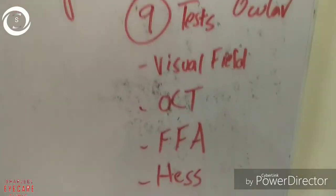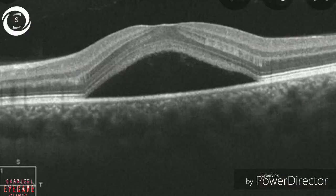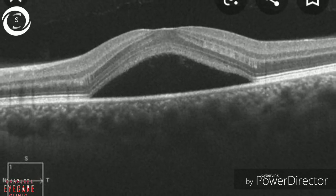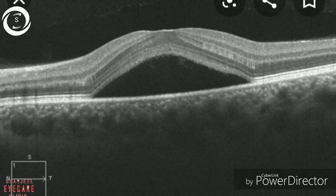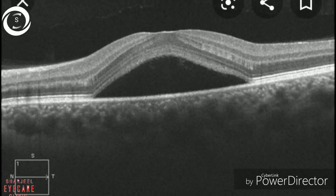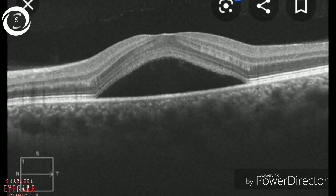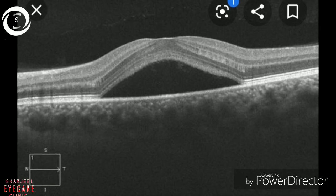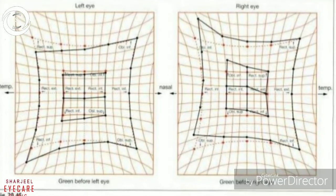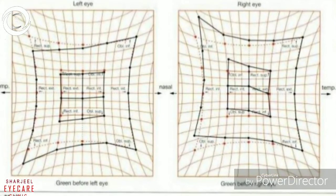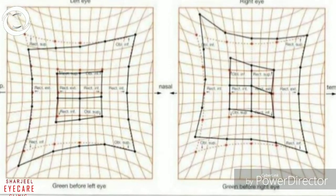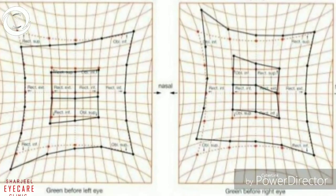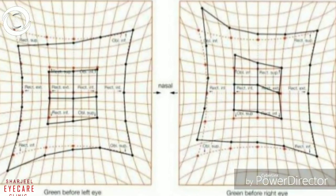The ninth station will be about tests of the eye: visual fields, OCT, FFA, and Hess chart — why they are performed and in which diseases. OCT is shown here demonstrating central serous chorioretinopathy; you can also be shown macular hole OCT, cystoid macular edema OCT, or CNV OCT. For the Hess chart, you may be given third nerve, sixth nerve, or fourth nerve palsy and have to identify the test and diagnose the disease.